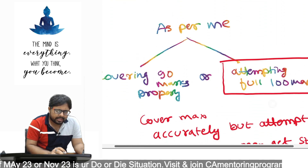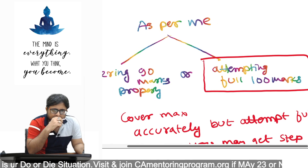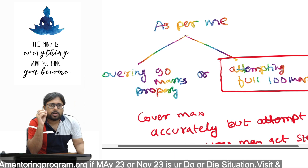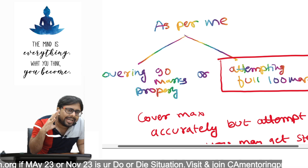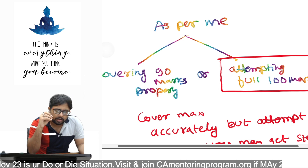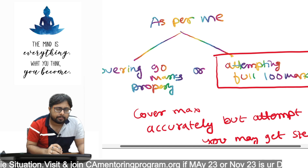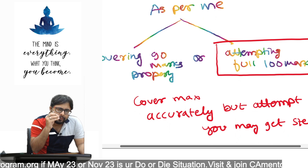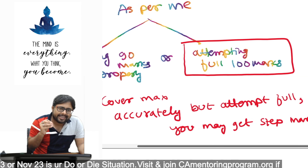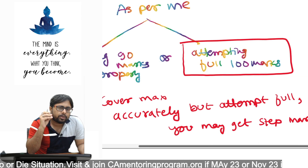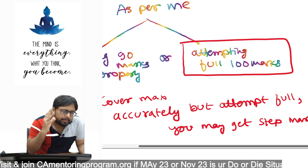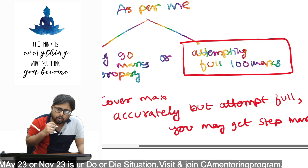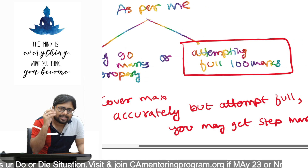A frequently asked question I get from students is: should I focus on covering 80 or 90 marks properly, or should I be concerned about attempting the full 100 marks? If you know 80 or 90 marks well, attempt those properly — but also give a few minutes to attempt the remaining marks and try to reach 100 out of 100. Even if you didn't fully know those 20 marks, write something that makes sense and where you might get step marks.